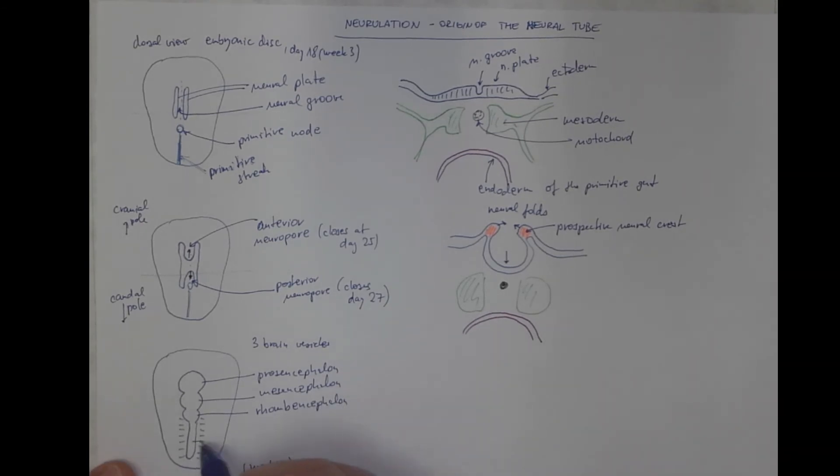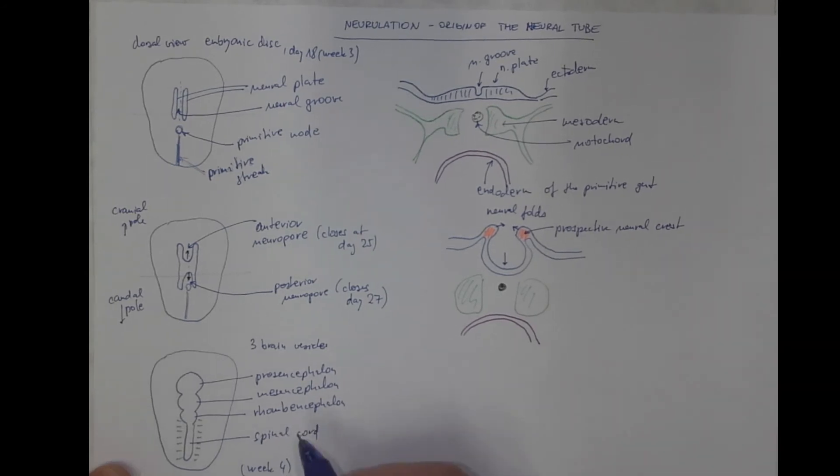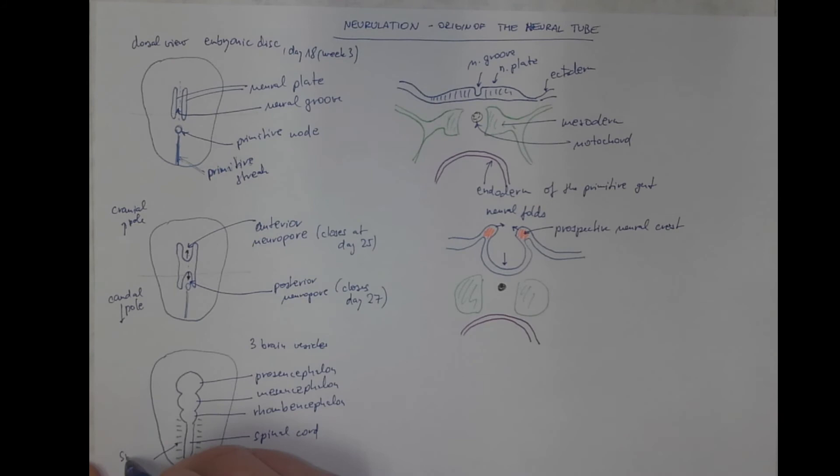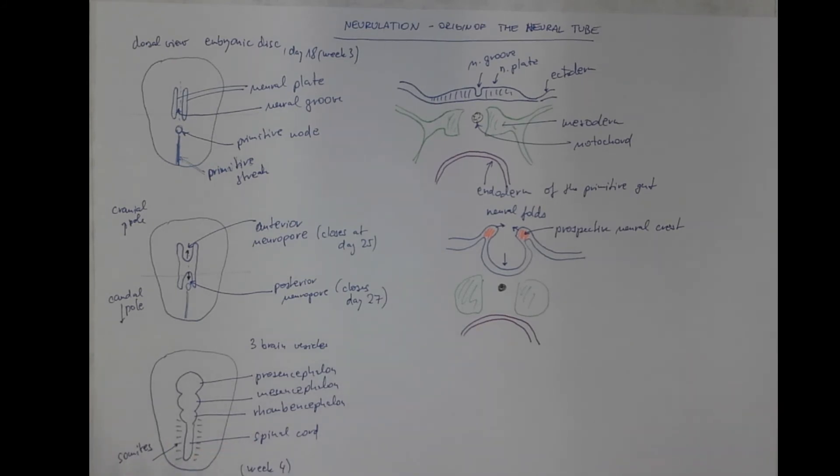This would be the spinal cord. And the somites, the body segments. Again, in a cross section through this region, we will see the surface, the body surface ectoderm or the dorsal part of the embryo, and the completely separated neural tube.